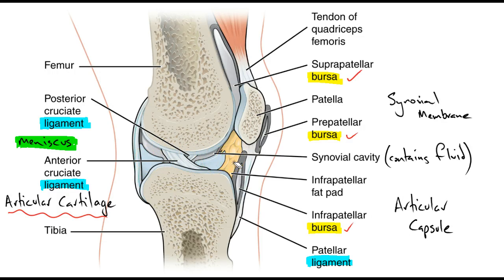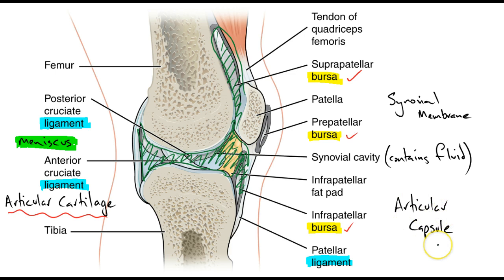Our synovial membrane runs around the inside of our synovial joint. The synovial membrane helps produce synovial fluid that would then fill the cavity itself. The articular capsule is made up of a fibrous layer as well as the synovial membrane. That fibrous layer sits on the outside of the synovial membrane to help keep the fluid within the joint.